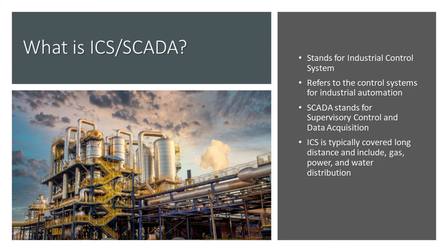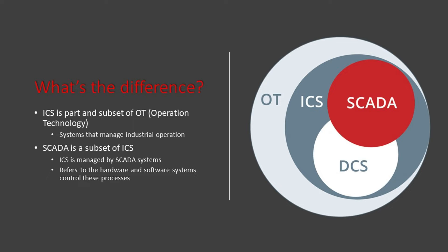So, what is ICS SCADA? ICS stands for Industrial Control System, and it generally refers to the control systems with industrial automation. SCADA stands for Supervisory Control and Data Acquisition, which is a type of ICS. When we talk about industrial control systems, we're typically referring to systems that traditionally cover long distances and include gas, power, and water distribution. Let's break down how these fit together and the differences between ICS and SCADA.